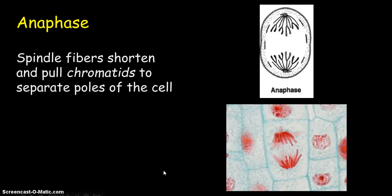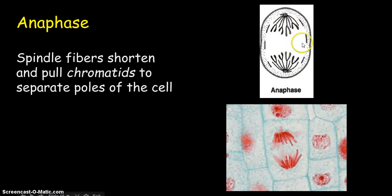The next phase is anaphase, where the spindle fibers actually begin to shorten and they pull each chromatid to each side of the cell. So half the DNA goes that way and half the DNA goes this way — or rather, half of the full doubled copy of DNA goes one way and the other half goes the other way. Each resulting cell will have the right amount of DNA if this goes according to plan. Here's a nice picture underneath the microscope to show what that actually looks like — this is a plant cell undergoing anaphase.